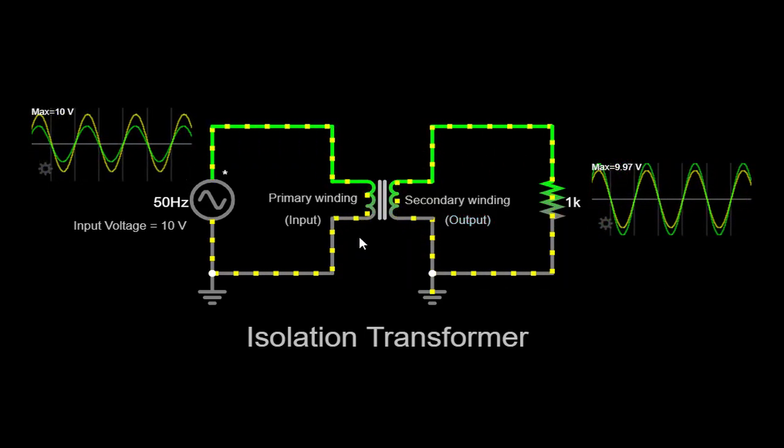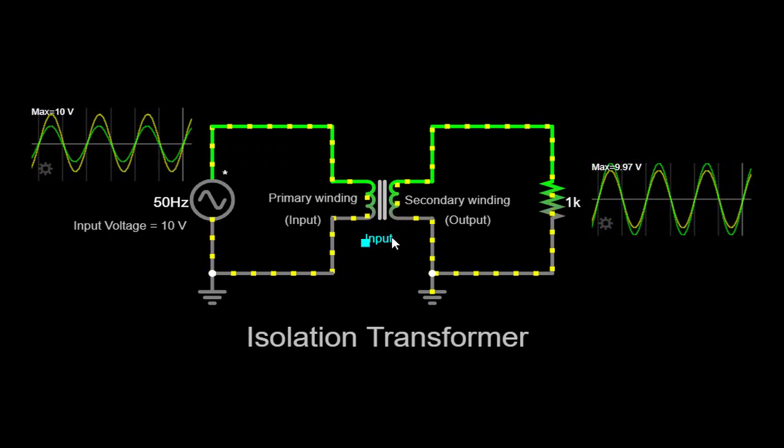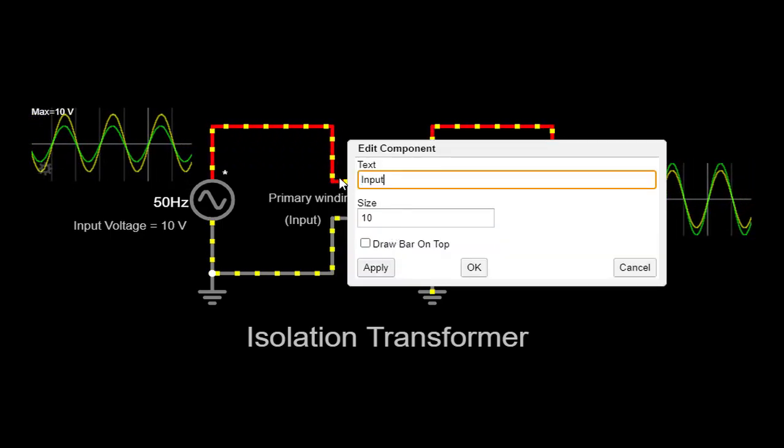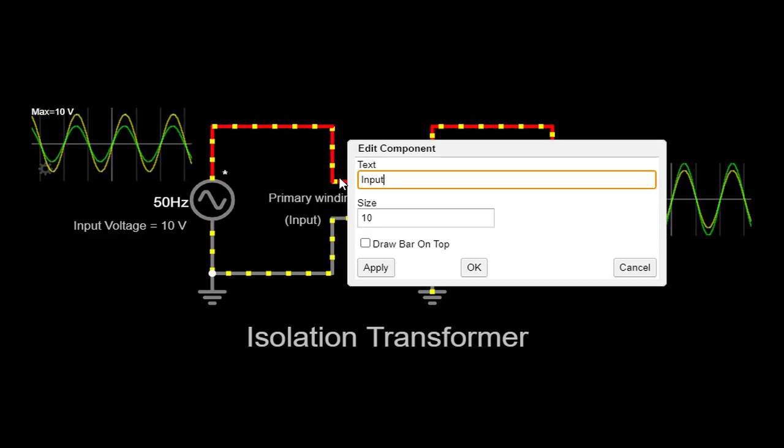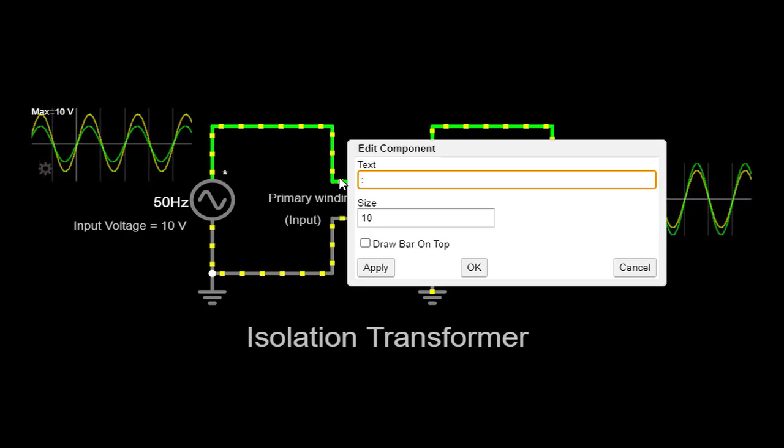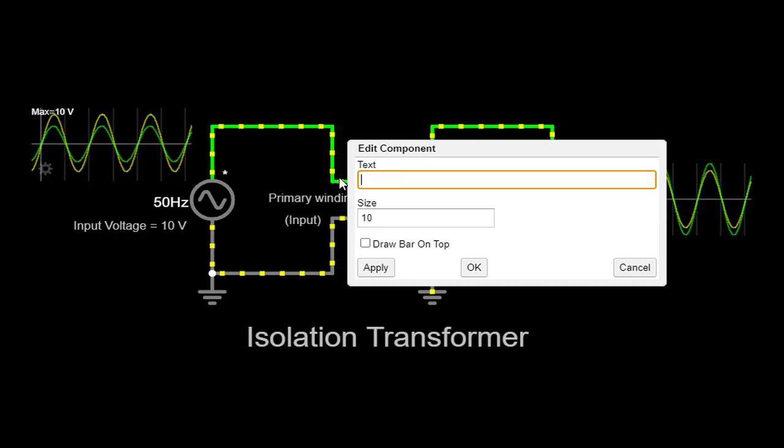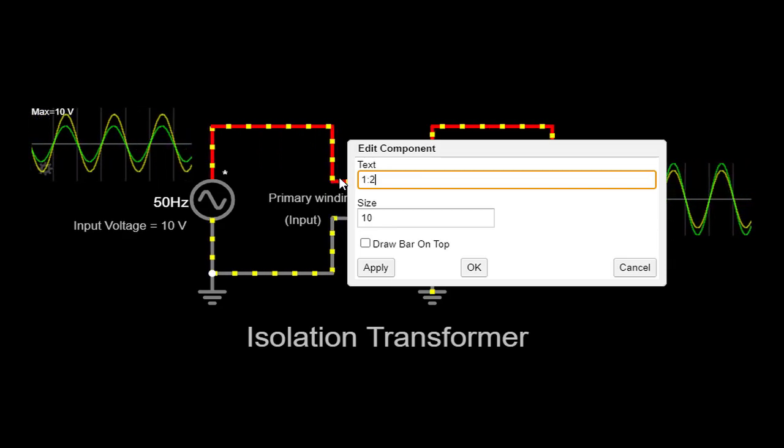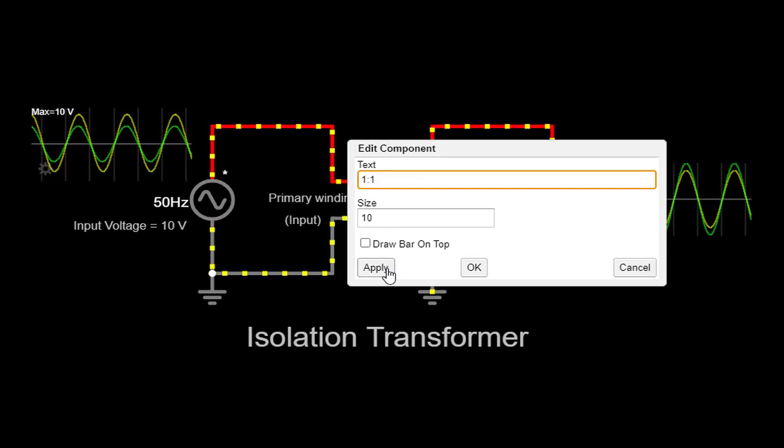Voltage regulation: Isolation transformers can help regulate voltage levels. By adjusting the turns ratio between the primary and secondary windings, the output voltage can be increased or decreased, ensuring a stable and consistent voltage supply to connected devices.